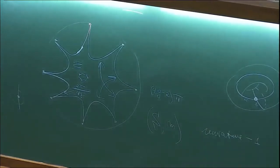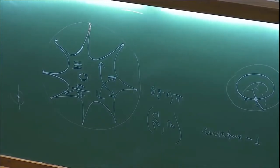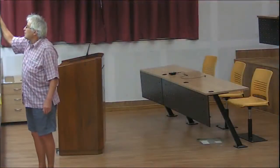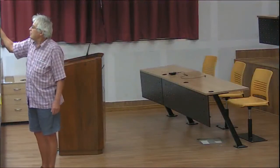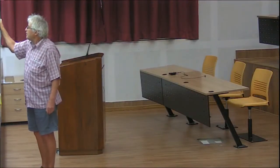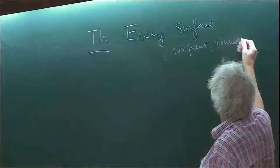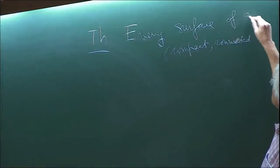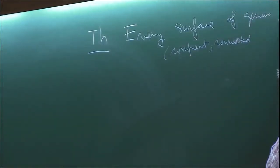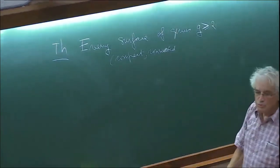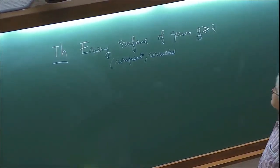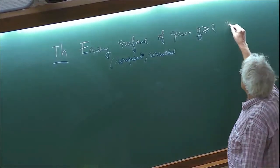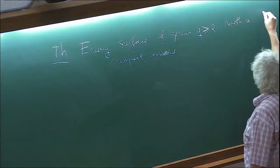Because the curvature is minus 1, we have a surface with a Riemannian metric and the curvature is constant minus 1. The uniformization theorem, which we do not do today — every surface, understood to be compact and connected, of genus G greater than or equal to 2, admits a metric of constant curvature equal to minus 1.